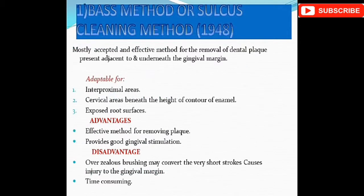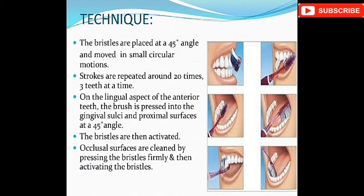The Bass method, or sulcus cleaning method, is adaptable for interproximal areas, cervical areas, beneath the height of contour, enamel-exposed root surfaces. Its advantages are effective plaque removal and good gingival stimulation; its disadvantage is overzealous brushing. The technique: bristles are placed at a 45-degree angle and moved in small circular strokes, repeated about 20 times. On the lingual aspect of anterior teeth, the brush is pressed into the gingival sulci and proximal surfaces at 45 degrees.